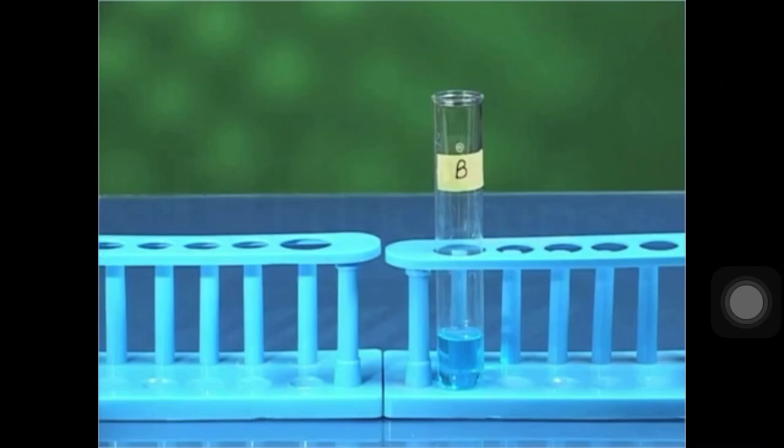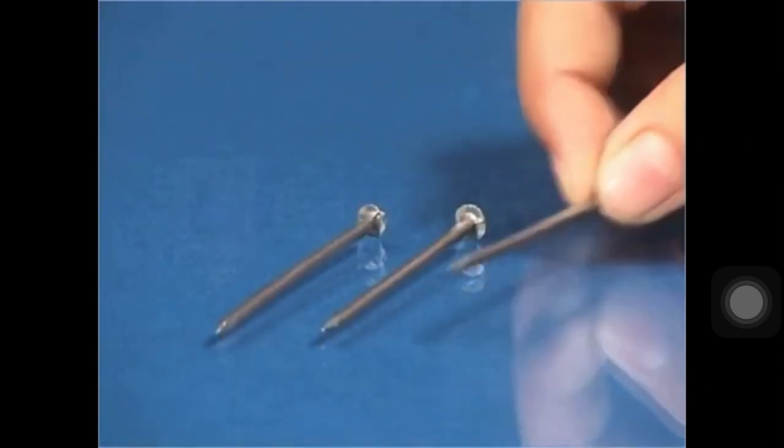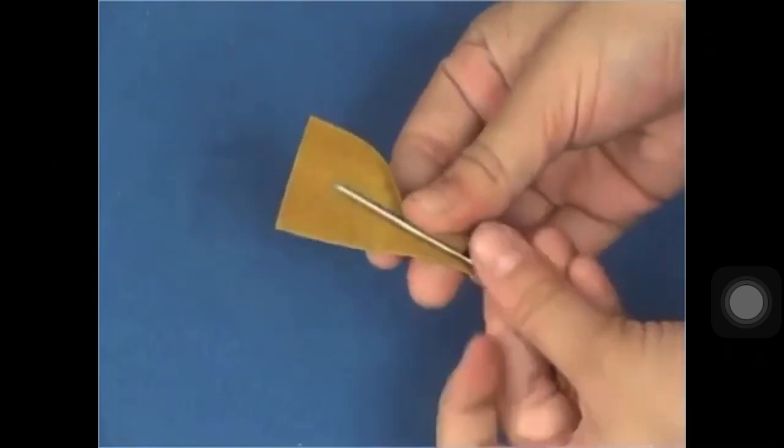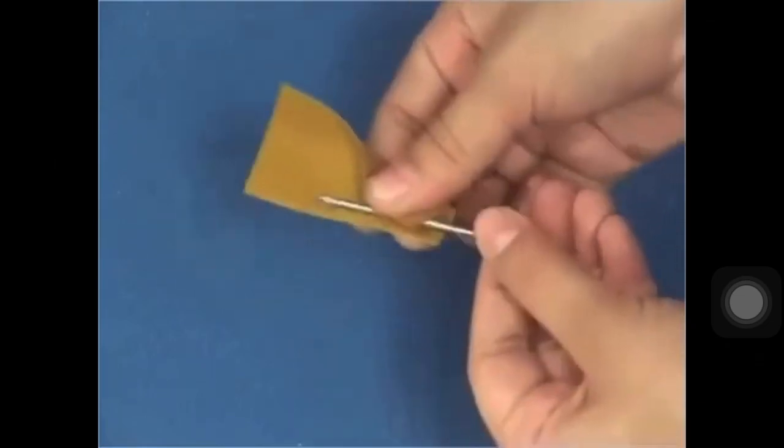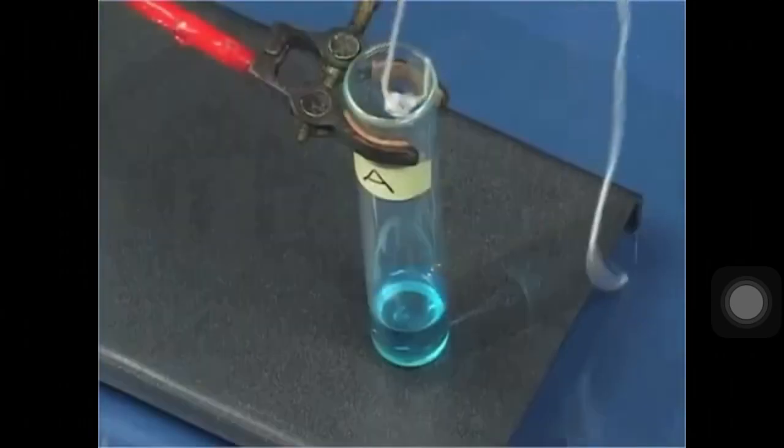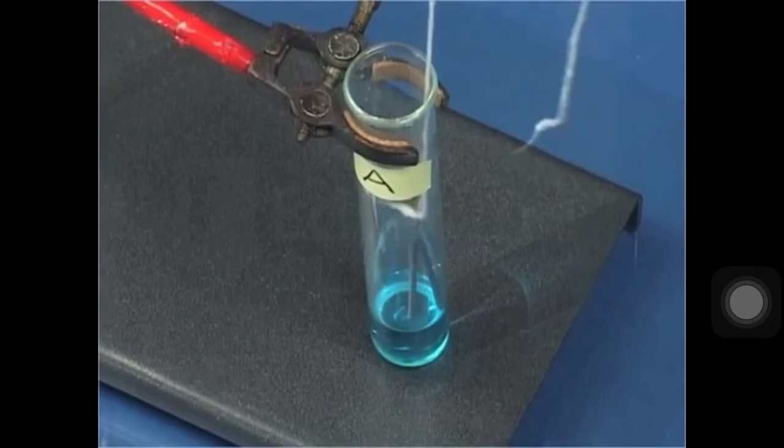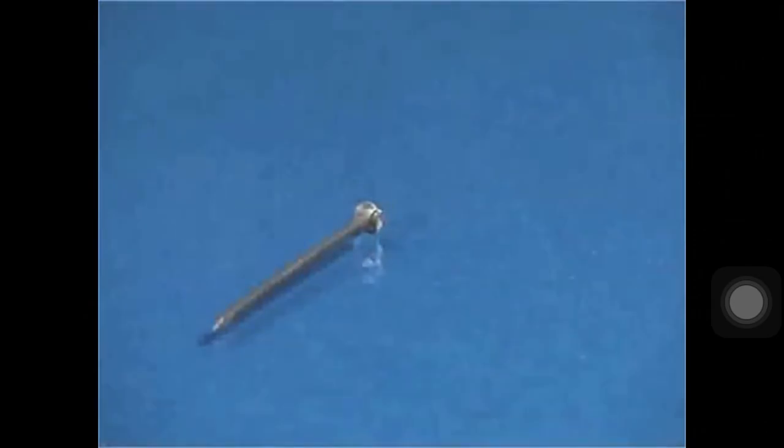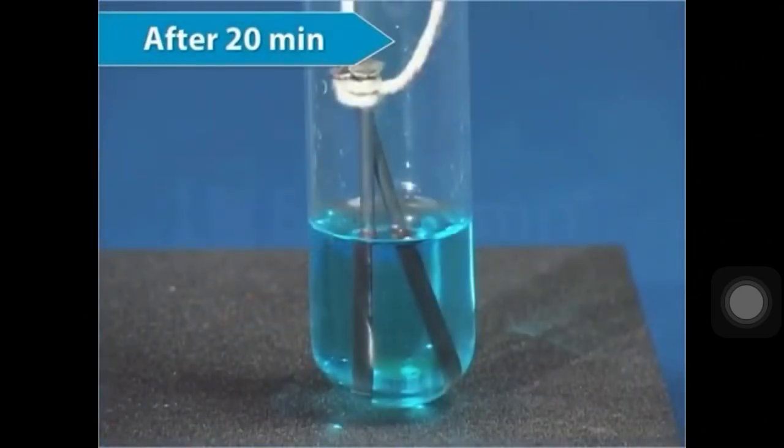Now, take three iron nails and clean them by rubbing with sandpaper. Tie two iron nails with a thread and immerse them carefully in the copper sulfate solution in test tube A for about 20 minutes and keep the third nail aside.